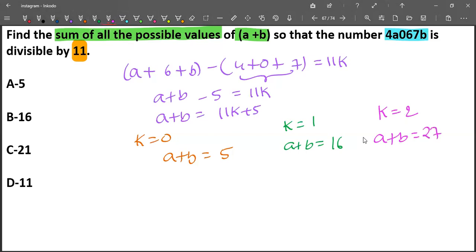But observe here, a and b are digits in that particular number, which means a is a single digit number and b is a single digit number.